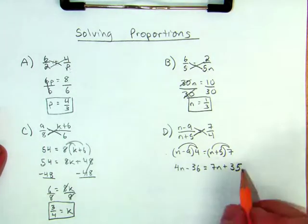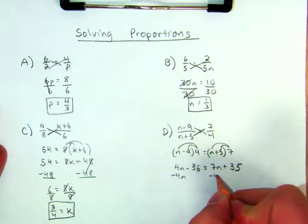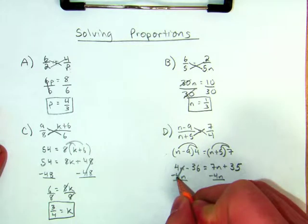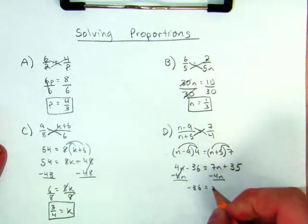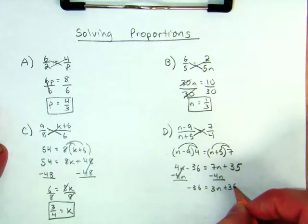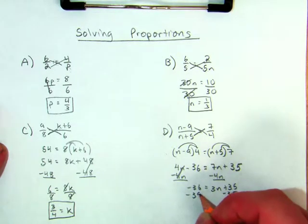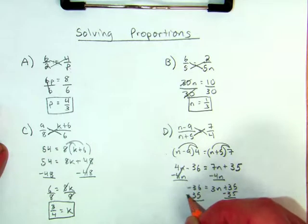Now I've got to solve. So let's subtract 4N from both sides. I'm left with negative 36 equals 3N plus 35. Subtract 35 from both sides, and I'm left with negative 36 minus 35, which gives me negative 71, equals 3N.